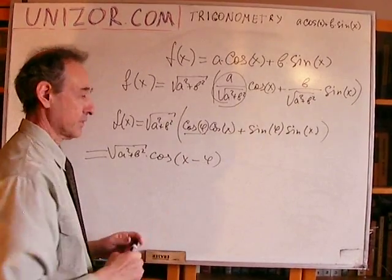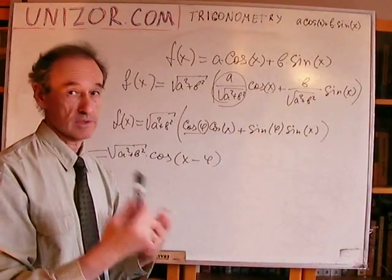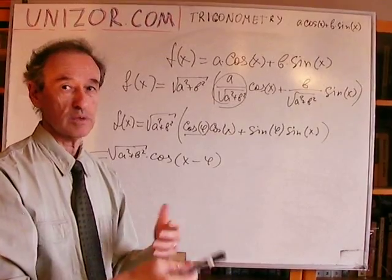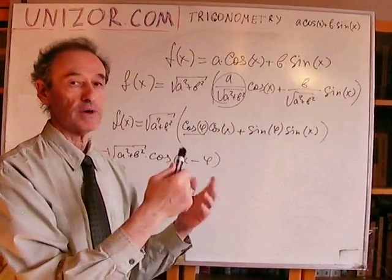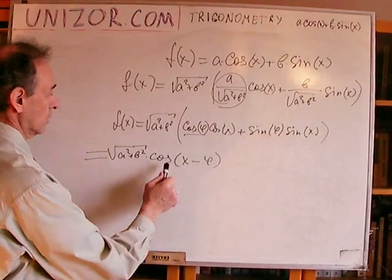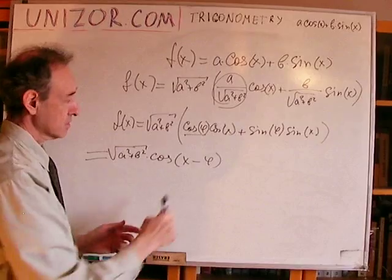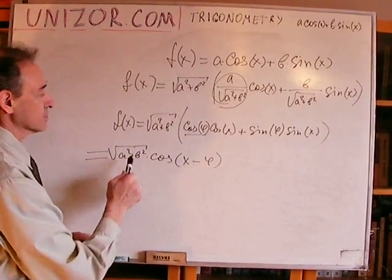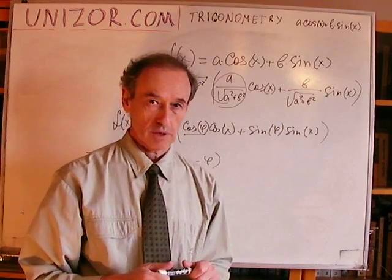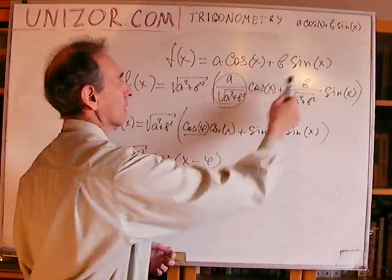So, how can we draw the graph of this function? We take the function cosine, then we shift it to the right by φ, whatever the φ is, and we can determine the φ using again, a and b. So, we know the cosine of φ, we know everything. So, we shift it by φ, and then we stretch it vertically. So, this is the horizontal shift, and this is the vertical stretch by √(a² + b²).